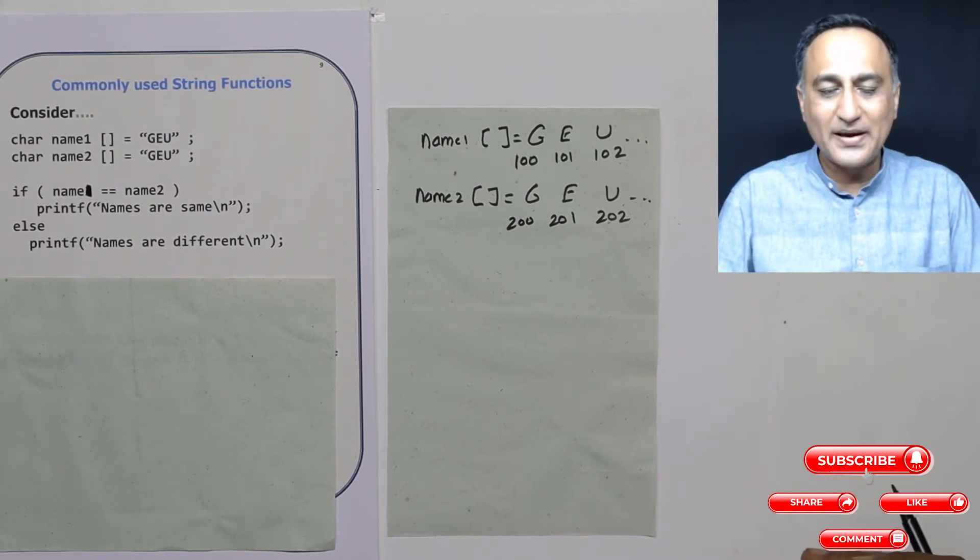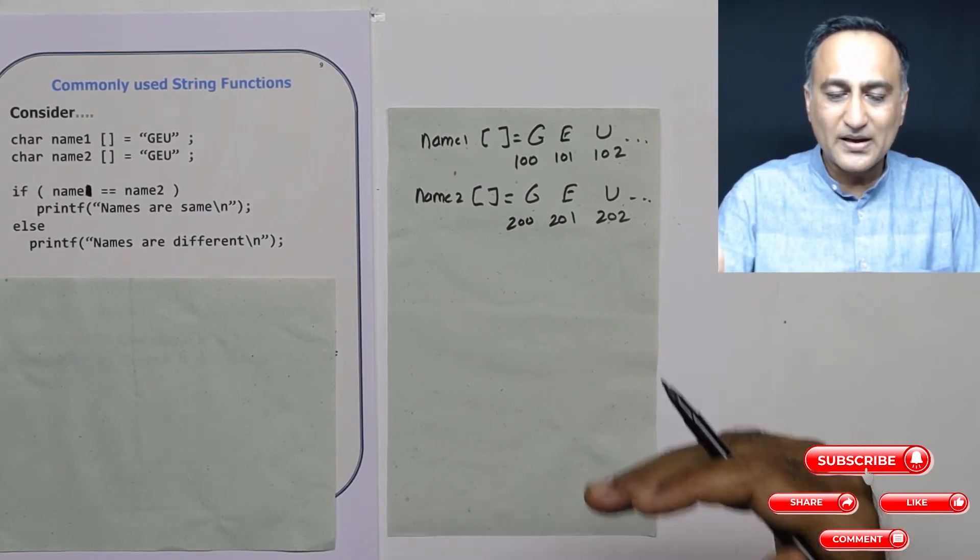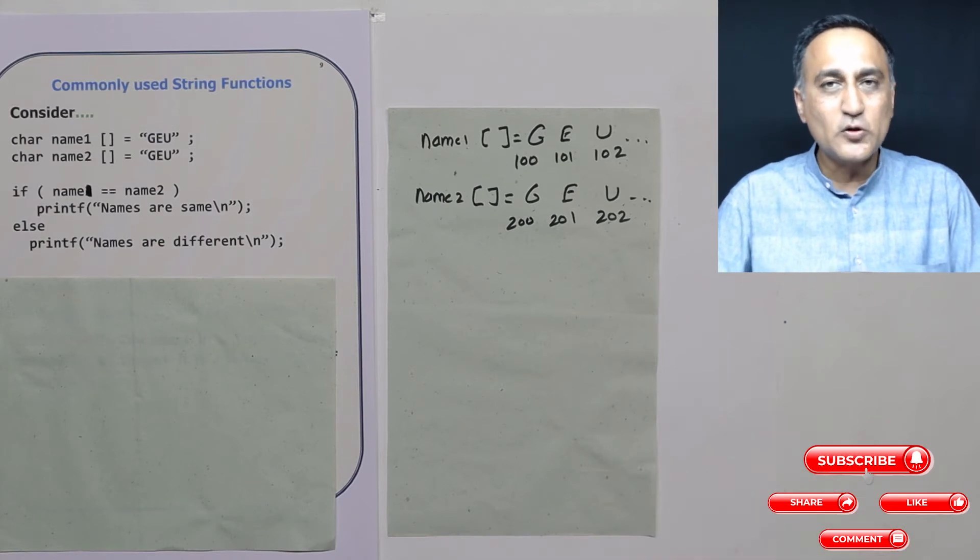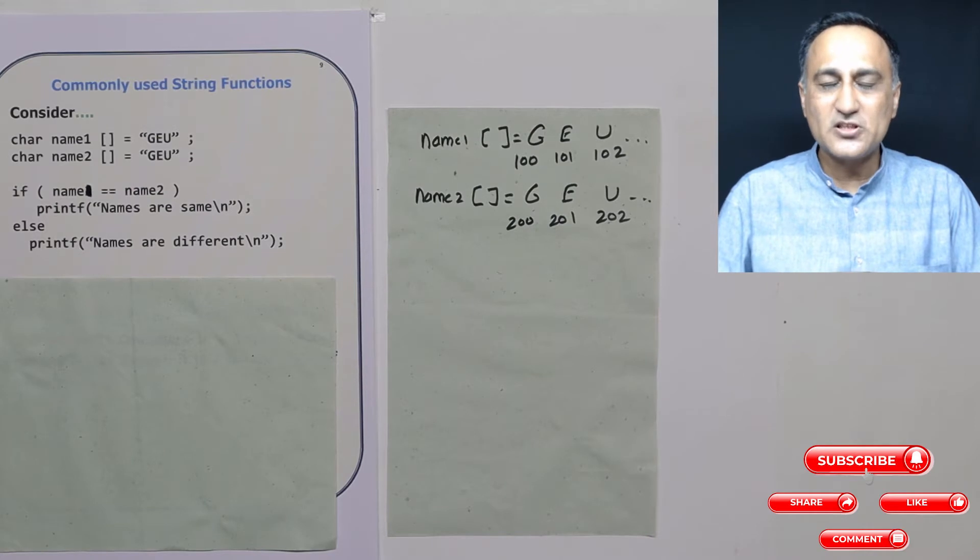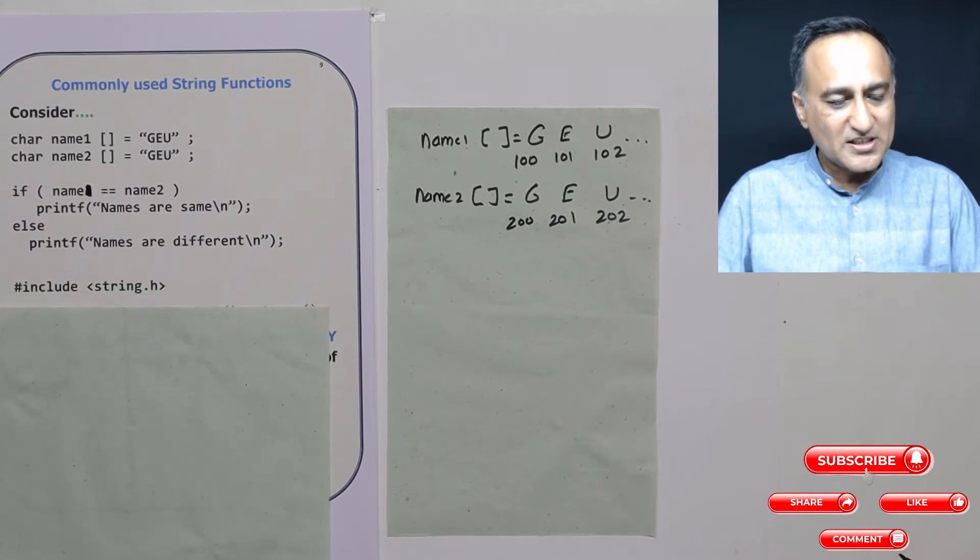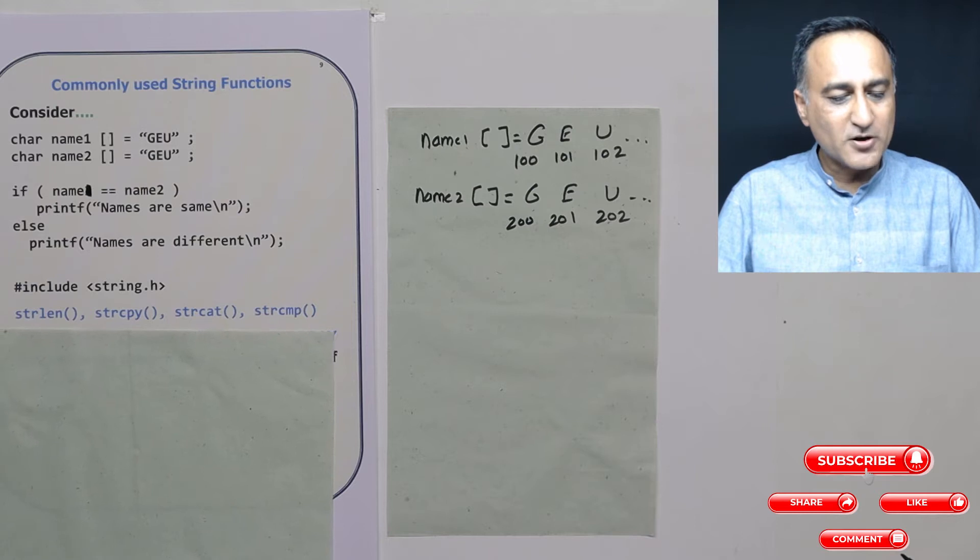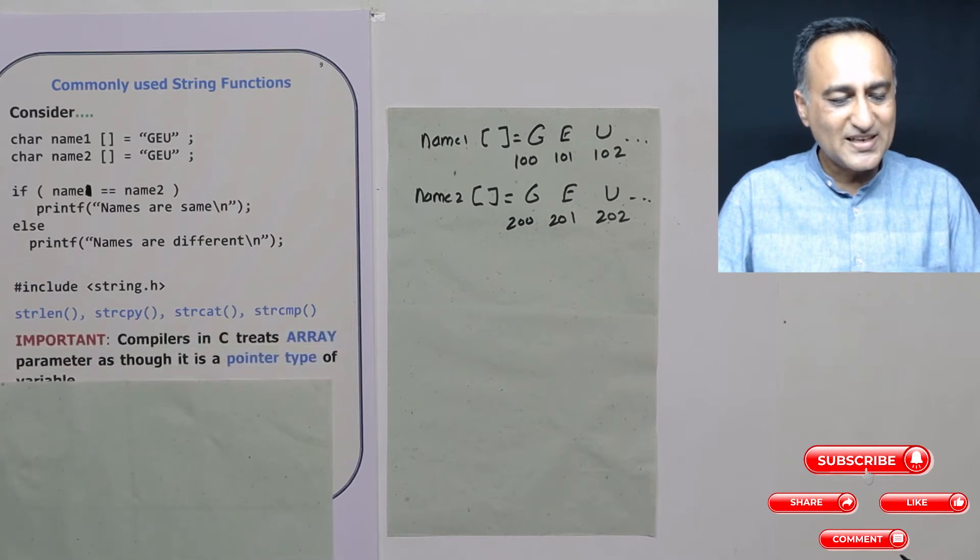There is a different way of comparing characters. You have to compare character by character, or you got to use a library function called strcmp, which is part of string.h. Let's take a look at the different library functions we're going to discuss over the next couple of sessions.